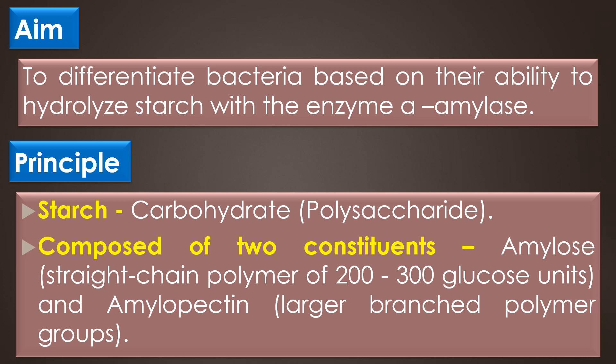To be of metabolic value to the bacteria, starch must first be split into smaller fragments or individual glucose molecules. Organisms that produce and secrete the extracellular enzyme alpha amylase and oligo 1,6 glycosidase are able to hydrolyze starch by breaking the glycosidic linkages between the sugar subunits into maltose, a disaccharide, and some monosaccharides such as glucose.